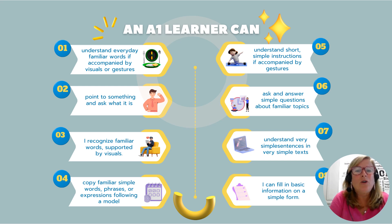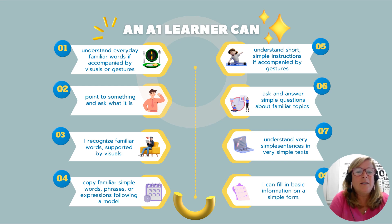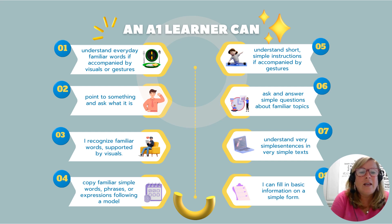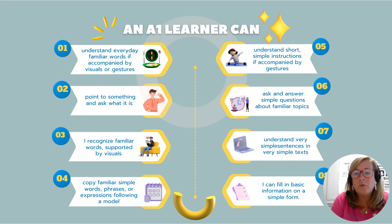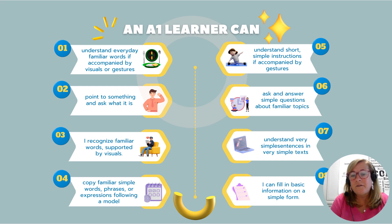So what can an A1 learner do? It's important to understand this so that we are conscientious about giving students at this level tasks they can accomplish. They can understand everyday familiar words if accompanied by visuals or gestures; recognize familiar words supported by visuals; copy familiar simple words, phrases, or expressions following a model; understand short simple instructions if accompanied by gestures; ask and answer simple questions about familiar topics; understand very simple sentences in simple texts; and fill in basic information on a simple form with some support.